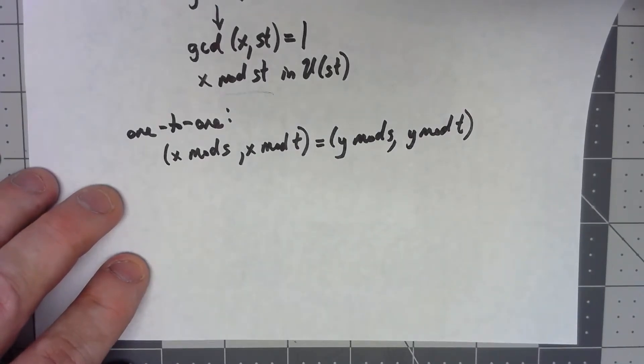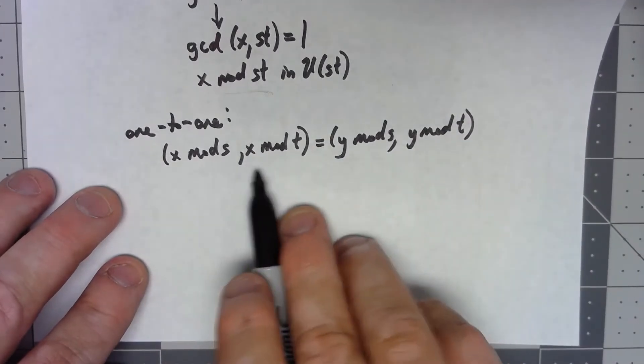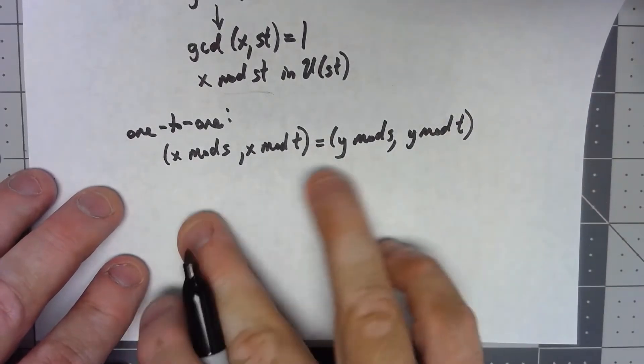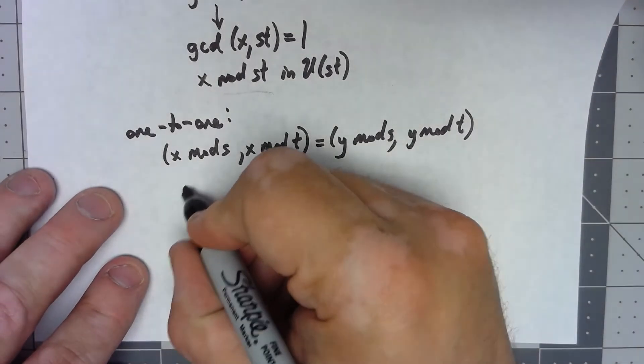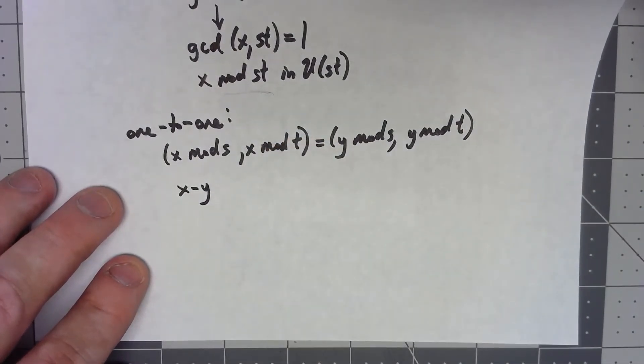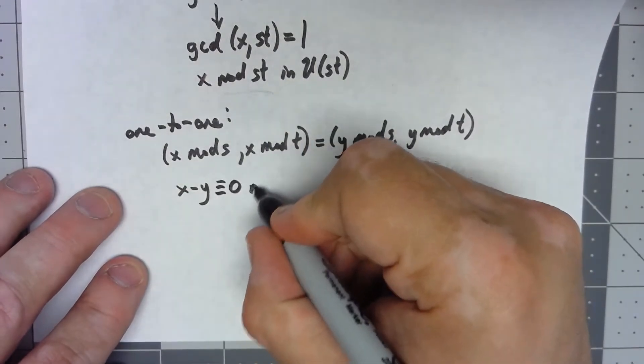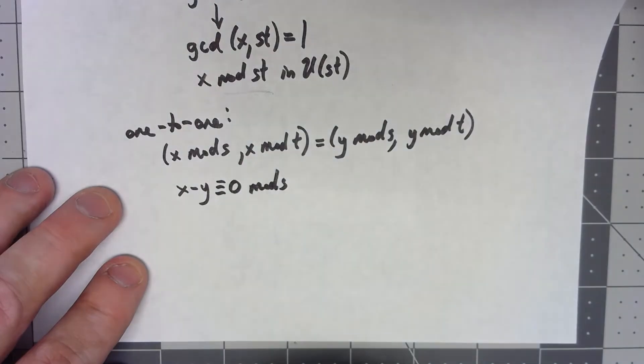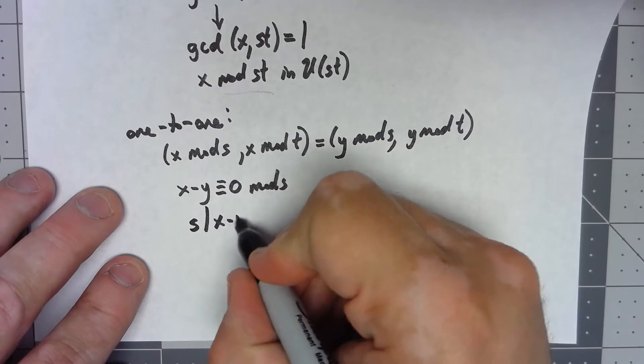Okay, so what do we say here? Because of what this is, what this has to say is that x mod s and y mod s, they don't have to be exactly the same x and y to get the same thing mod s, but x minus y must be congruent to 0 mod s, or in other words, s divides x minus y.